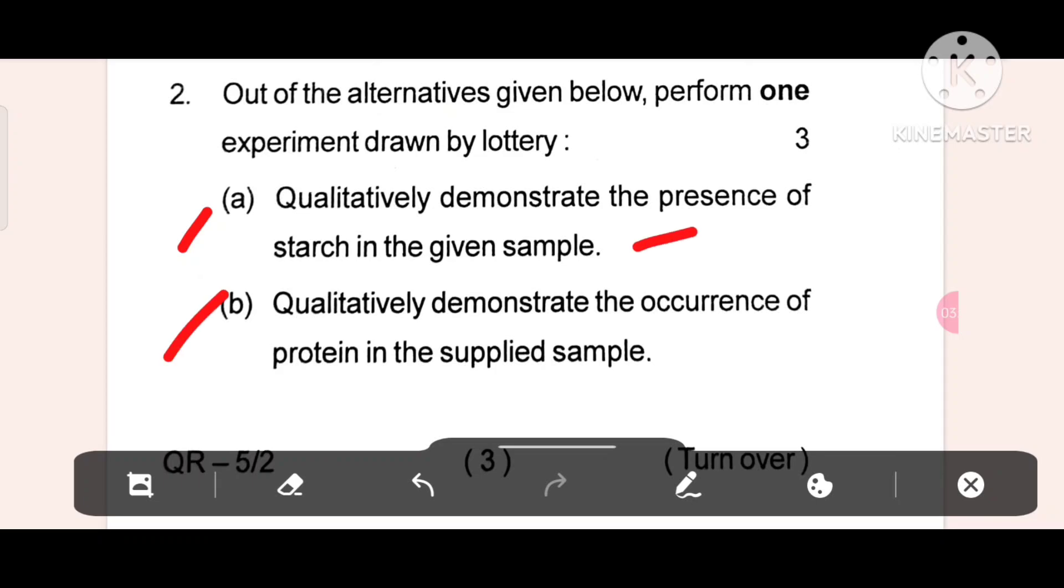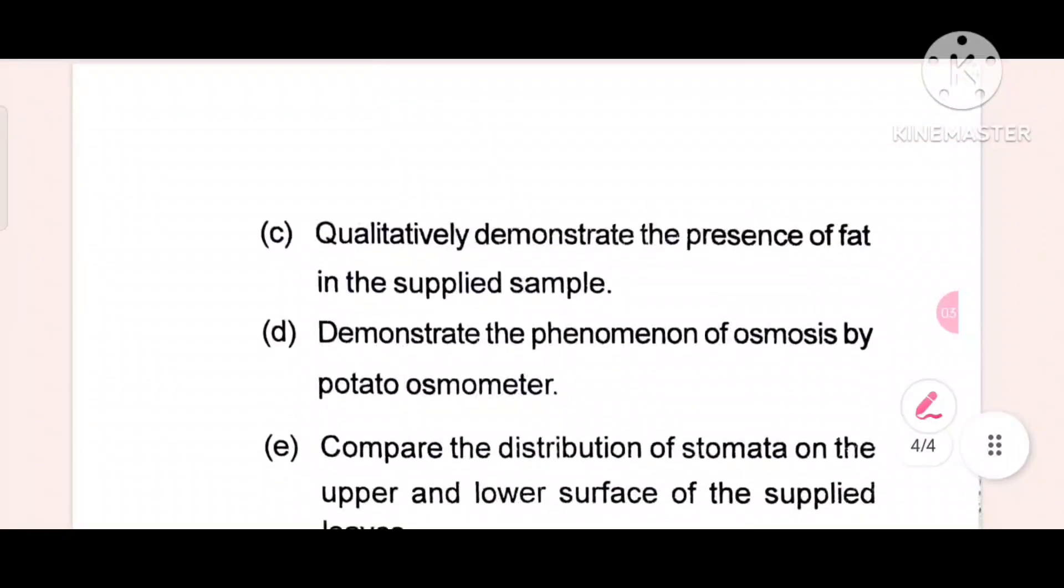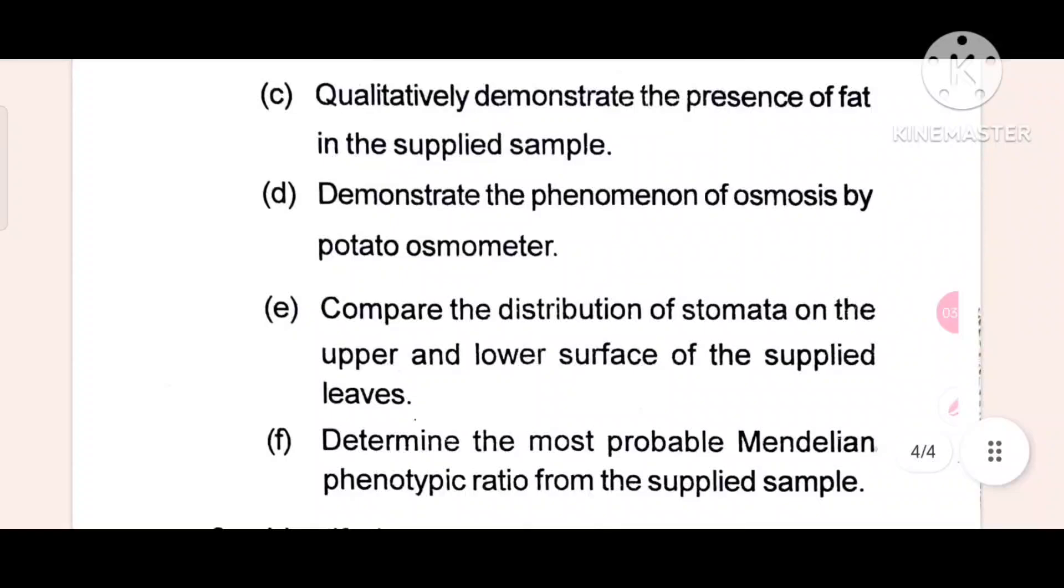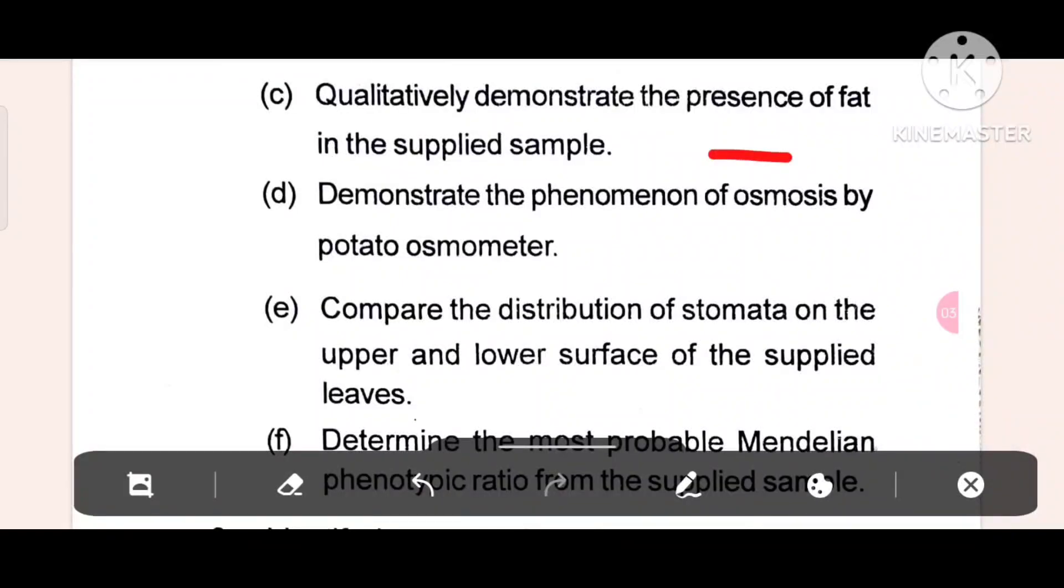Number B, qualitatively demonstrate the occurrence of protein in the supplied sample. Number C, qualitatively demonstrate the presence of fat in the supplied sample.